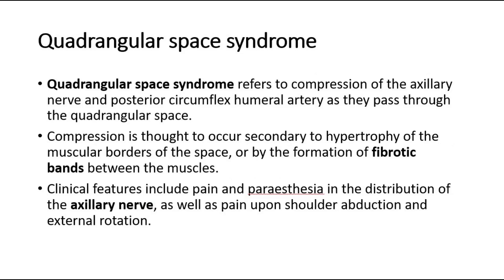There is a condition called the quadrangular space syndrome. It refers to compression of the axillary nerve and posterior circumflex humeral artery as they pass through the quadrangular space. Compression is thought to occur secondary to hypertrophy of the muscular borders of the space or by the formation of fibrotic bands between the muscles.